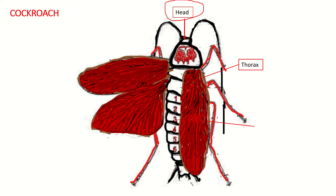The head is covered by an exoskeleton made of chitinous plates called sclerites, also referred to as the head capsule. The head capsule is a protective covering of the head of the cockroach. The diffused margins of these sclerites are visible as lines called sutures. The topmost part of the head, called the vertex, is formed by two epicranial plates joined in front by an inverted Y-shaped structure. The head bears a number of jointed appendages.